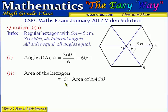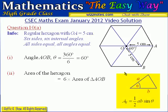The area of the hexagon equals 6 multiplied by the area of triangle AOB. OB is also 5 centimeters, giving a triangle with two known sides and an included angle. We use the trig formula for the area of a triangle: half the product of the two sides multiplied by the sine of the angle between them. That's the formula we're going to use to calculate the area of this triangle.